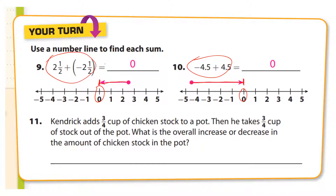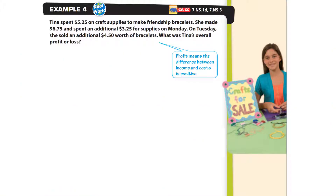Kendrick adds three-fourths of a cup of chicken to a pot, then takes three-fourths away. Since the amounts are equal and opposite, we'll end up with zero cups.